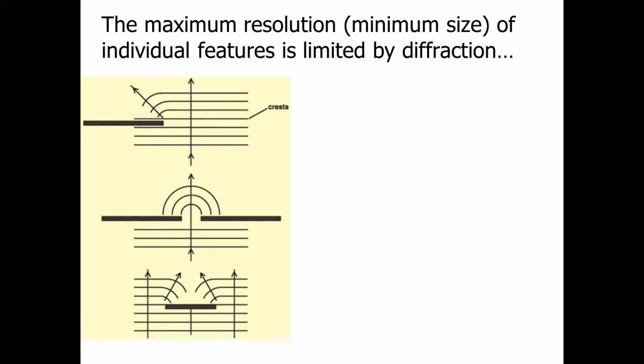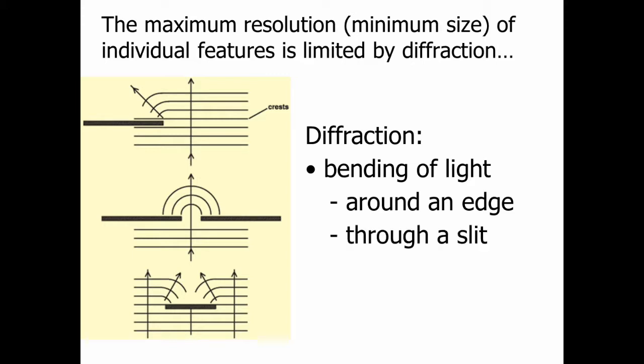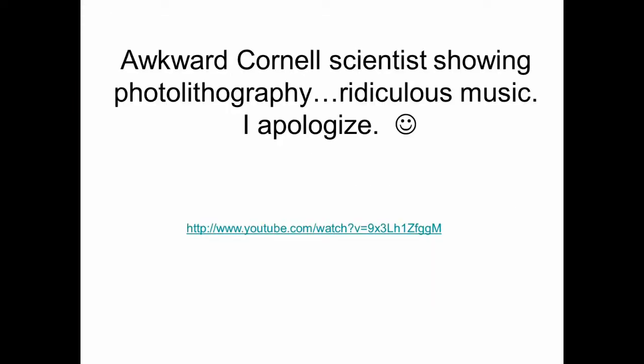When it comes to light, there are some setbacks in terms of resolution because of diffraction — the bending of light. If you have a mask placed on top of your photoresist and substrate, light can bend around the edges; it bends through a slit or when it passes an object. There's an example showing a Cornell scientist demonstrating photolithography that you can watch in the lecture.